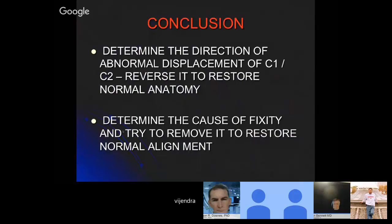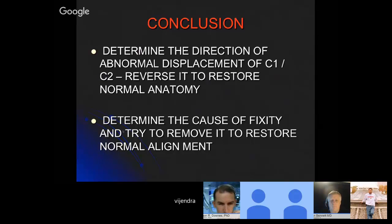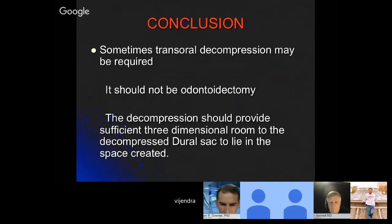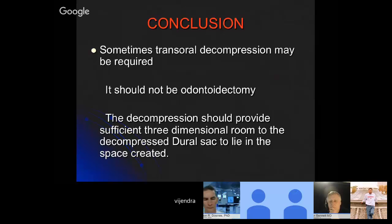One should determine the direction of abnormal displacement of C1 and C2 and reverse it to restore normal anatomy in all atlanto-axial dislocations. One should determine the cause of fixity and try to remove it in fixed atlanto-axial dislocation. Therefore, so-called fixed and irreducible AAD and basilar invagination can all be reduced by a proper surgical technique. Sometimes transoral decompression may be required, but it should not be just odontoidectomy — the decompression should be generous and provide sufficient three-dimensional room to the decompressed neural sac.